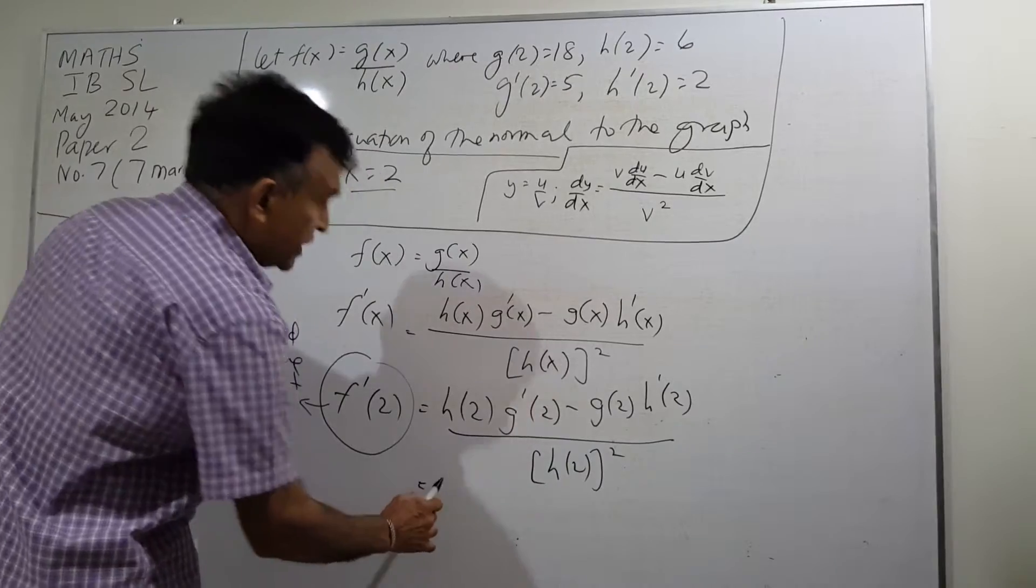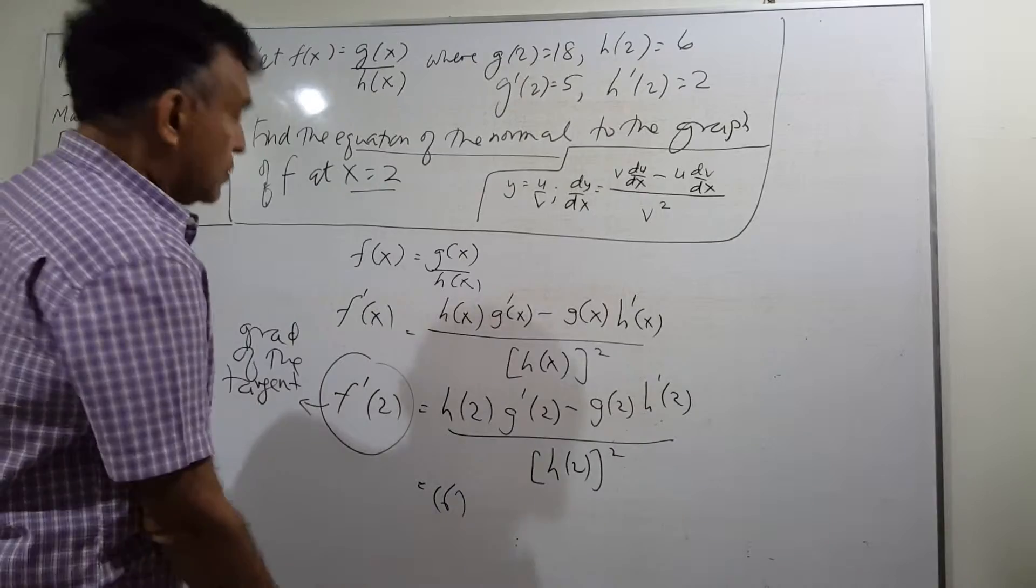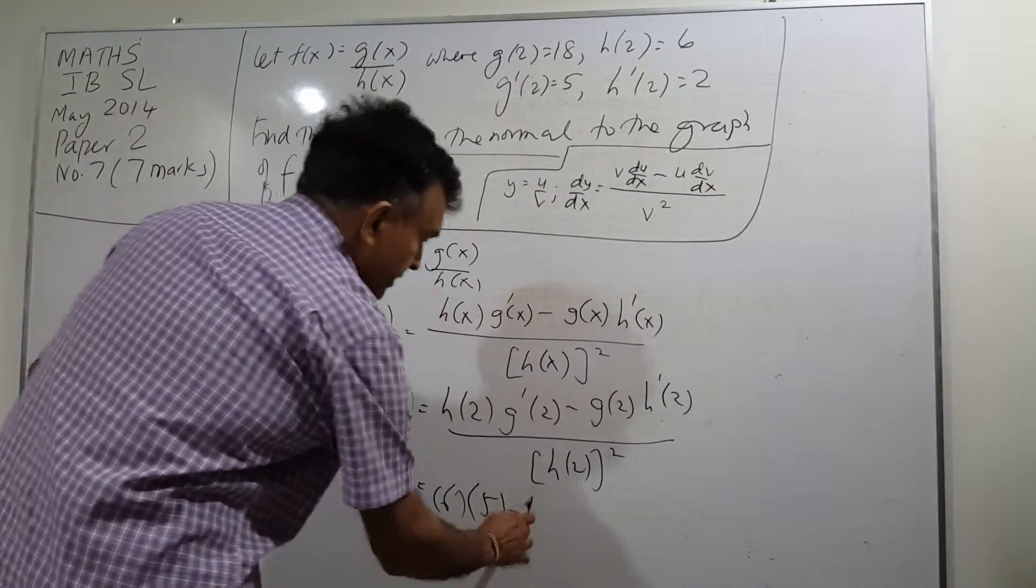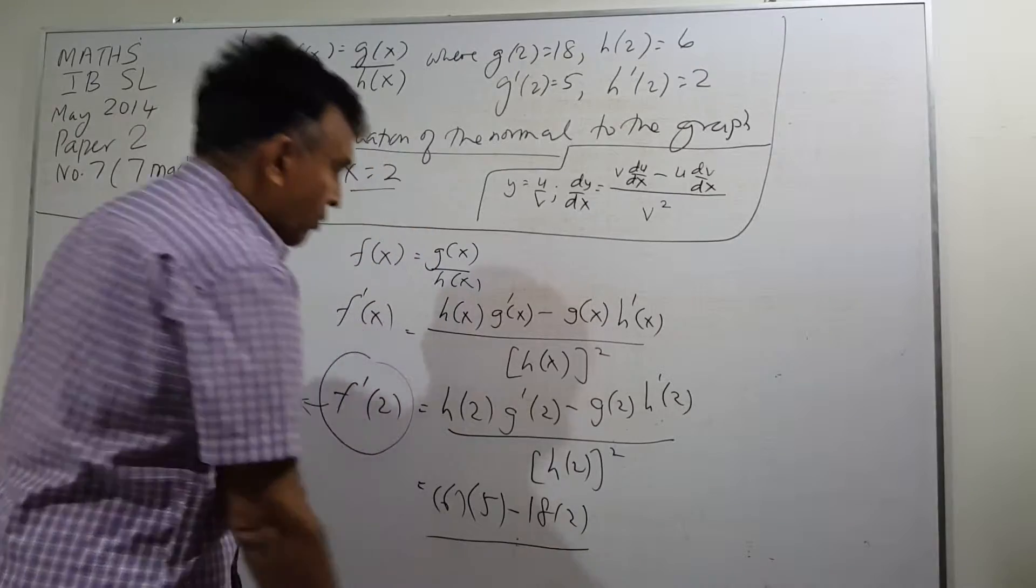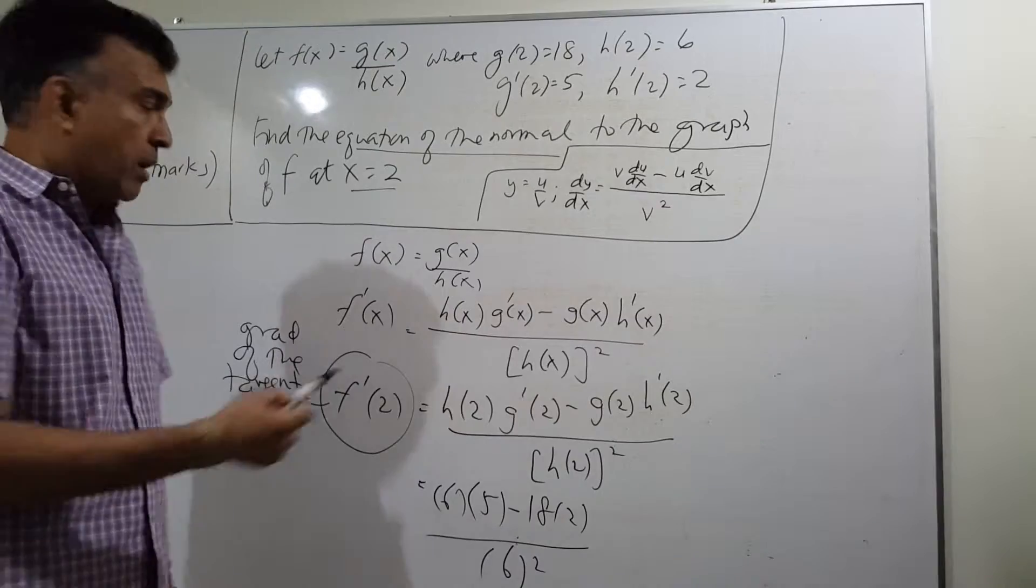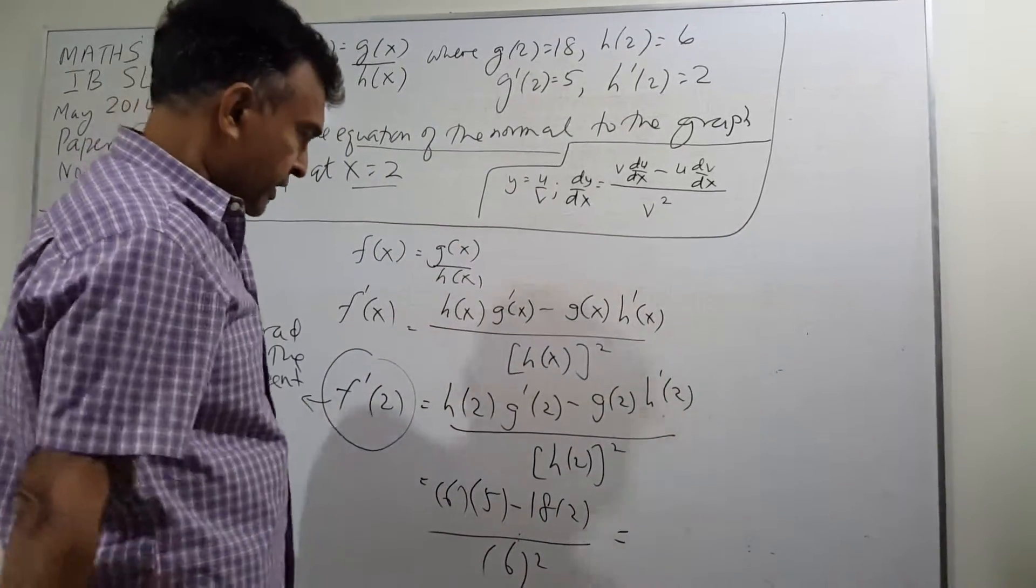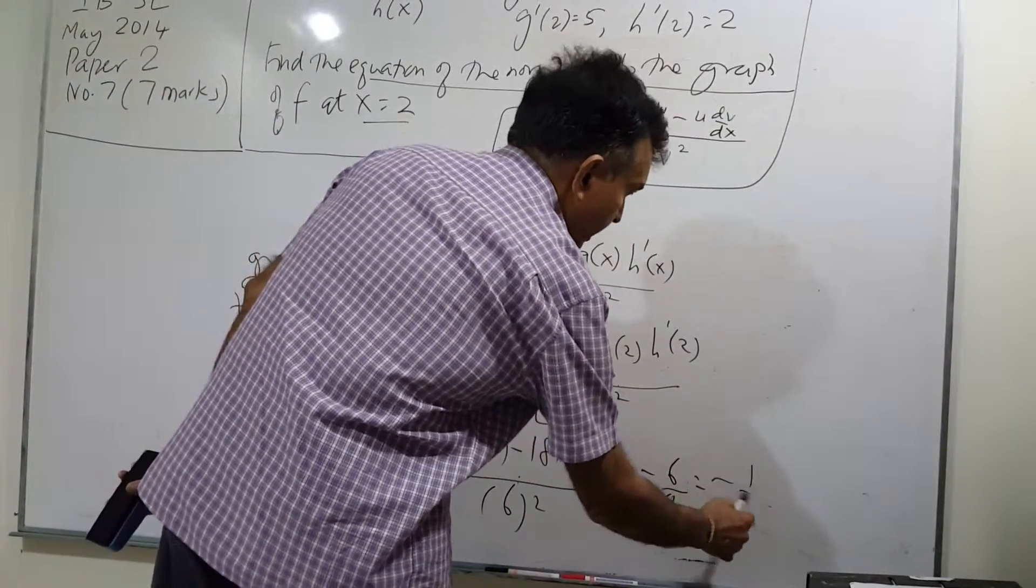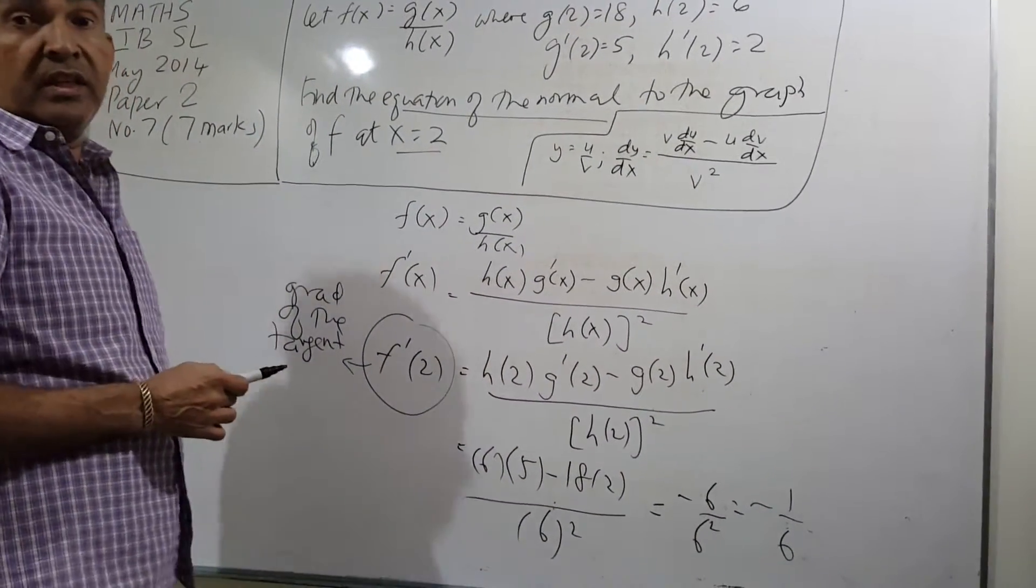Let's evaluate that. h of 2 is 6, g prime 2 is 5, g of 2 is 18, h prime 2 is 2, h of 2 is 6. All I'm doing is plugging in the numbers. So that will be 30 minus 36 is minus 6, negative 1 over 6. That is the gradient of the tangent.